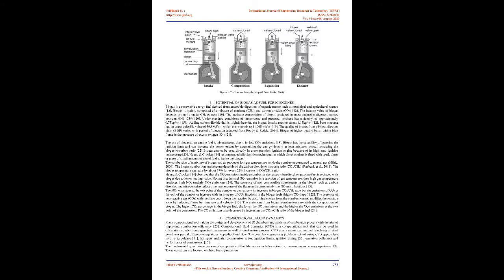Section 3: Potential of Biogas as Fuel for IC Engines. Biogas is a renewable energy fuel derived from anaerobic digestion of organic matter such as municipal and agricultural wastes. Biogas is mainly composed of a mixture of methane (CH4) and carbon dioxide (CO2). The heating value of biogas depends primarily on its CH4 content. The methane composition of biogas produced in most anaerobic digesters ranges between 40% and 75%. Under standard conditions of temperature and pressure, methane has a density of approximately 0.75 kg/m³. Adding carbon dioxide, which is slightly heavier, the biogas density reaches about 1.15 kg/m³.